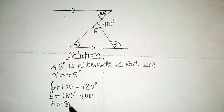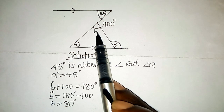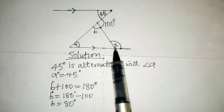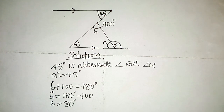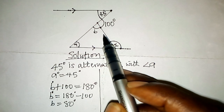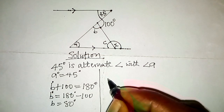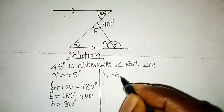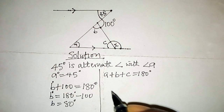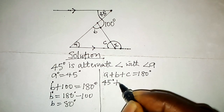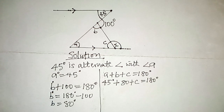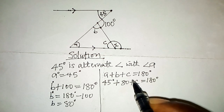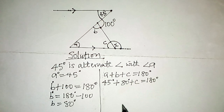Now that we have known angle A and angle B, we can look for angle C. We know that the sum of interior angles in a triangle is equal to 180 degrees. Therefore, A plus B plus C equals 180 degrees. We know A is 45 degrees and B is 80 degrees, so 45 plus 80 gives us 125 degrees.